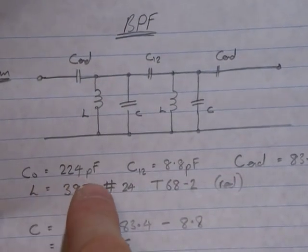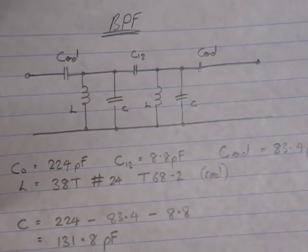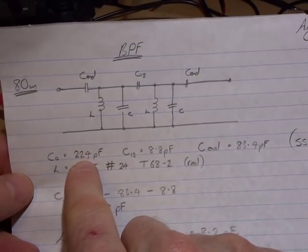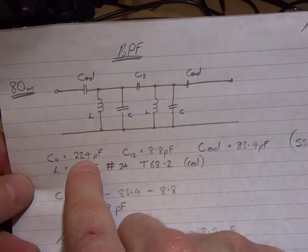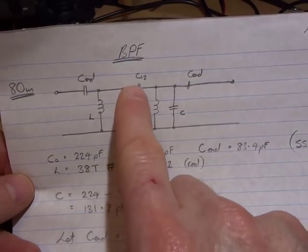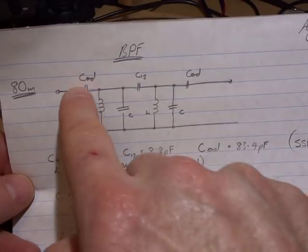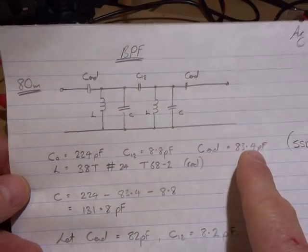So the actual filter itself has got two tuned circuits here with a coupling capacitor between the two. And the back of that particular appendix in that design book will give out a C0 of 224 picofarads, it'll give you C12, which is the coupling between the two tuned circuits, and the C-end, which these two capacitors here, it'll provide.